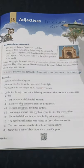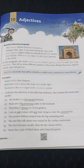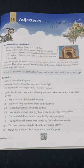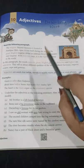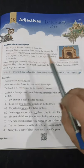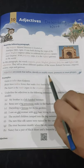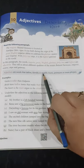Adjectives are describing words. They describe the nouns or pronouns. They tell us the details — the description of the noun, of the pronoun, or of the subject of the sentence. Adjectives are words that define, identify, or modify nouns, pronouns, or noun phrases. Here something is added to the meaning of nouns or pronouns — giving the definition, the identity, and the modification.